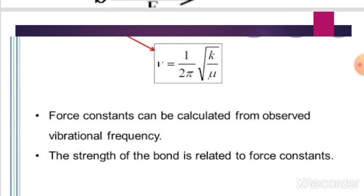We can give the frequency as nu. What is nu? The frequency is 1 upon 2 pi, under root of k by mu. Here, mu is the reduced mass for diatomic molecules, which is equal to m1 m2 upon m1 plus m2.